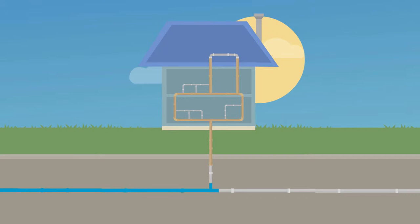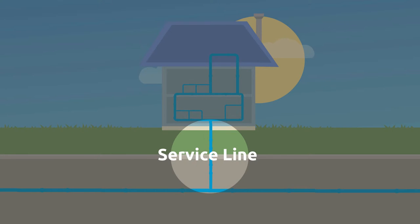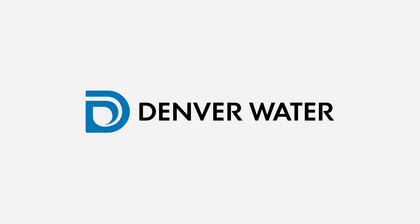Water can enter your home through a pipe called a service line, which connects your house to the water main under the street. The service line has a meter on it. That's how Denver Water knows how much water you use every month.